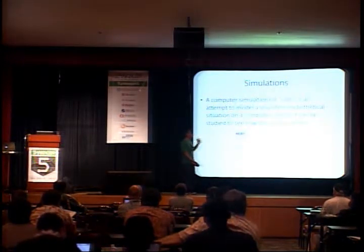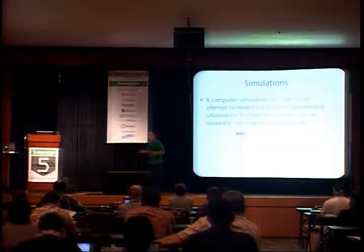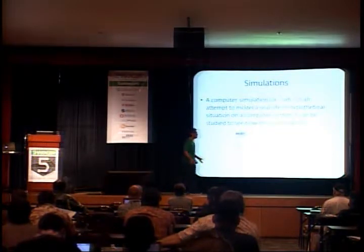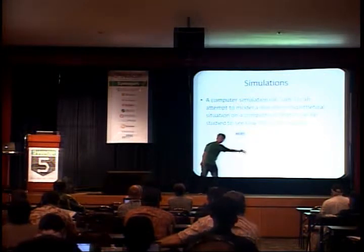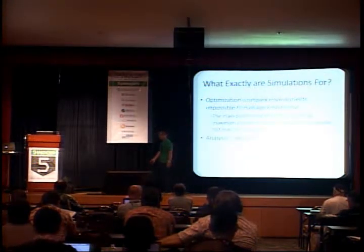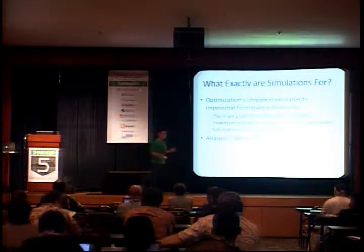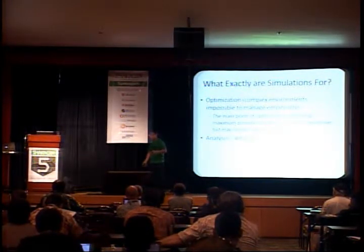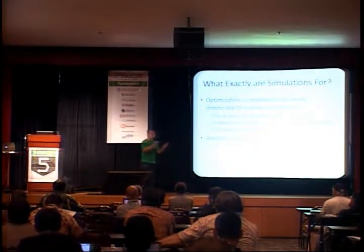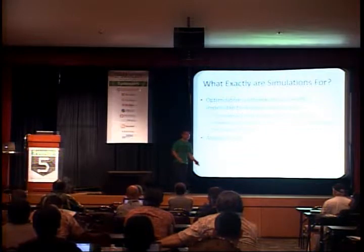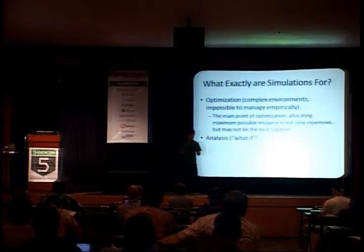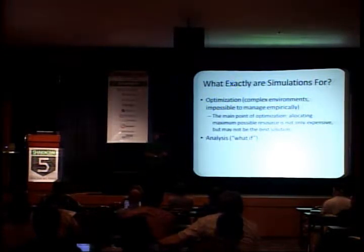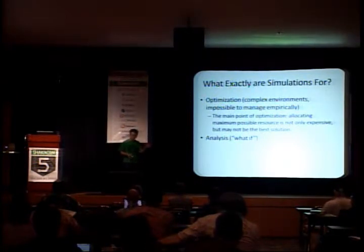So let's talk about simulations. Basically, simulations are, simply put, computers that reflect or imitate a real-life scenario — for example, a simulation of an assembly line. So why do we do simulations? Simulations are for two things: optimization and analysis. For optimization, we need to find the best possible solution for a certain problem or scenario. For analysis, we do what-ifs — what if we do this, what if we do that, what are the results of each of those scenarios?